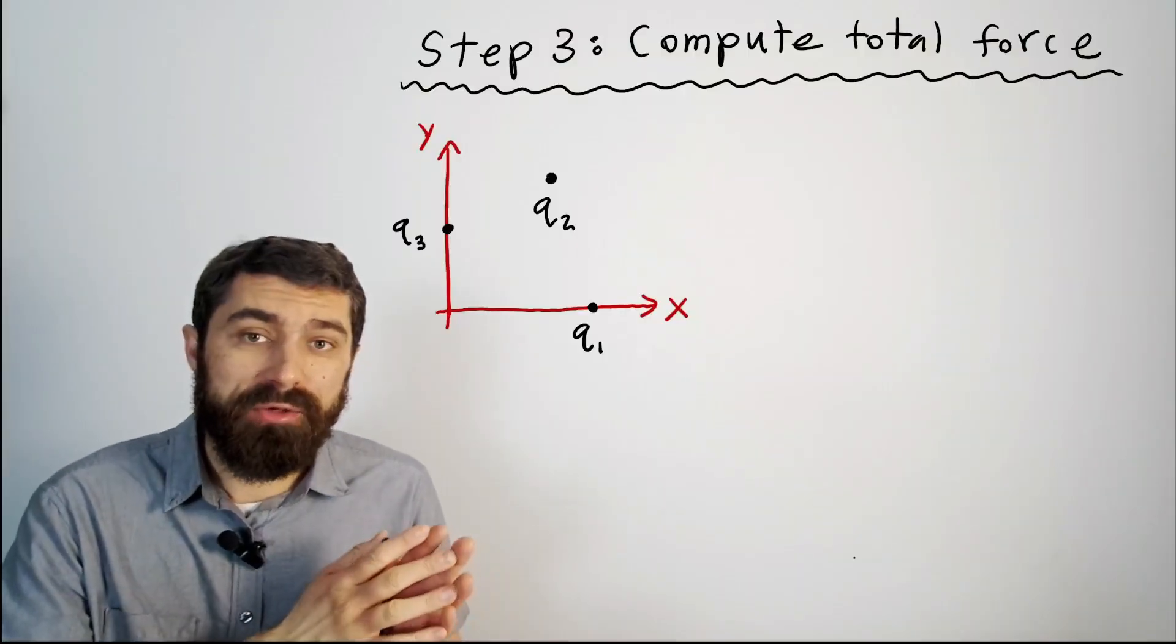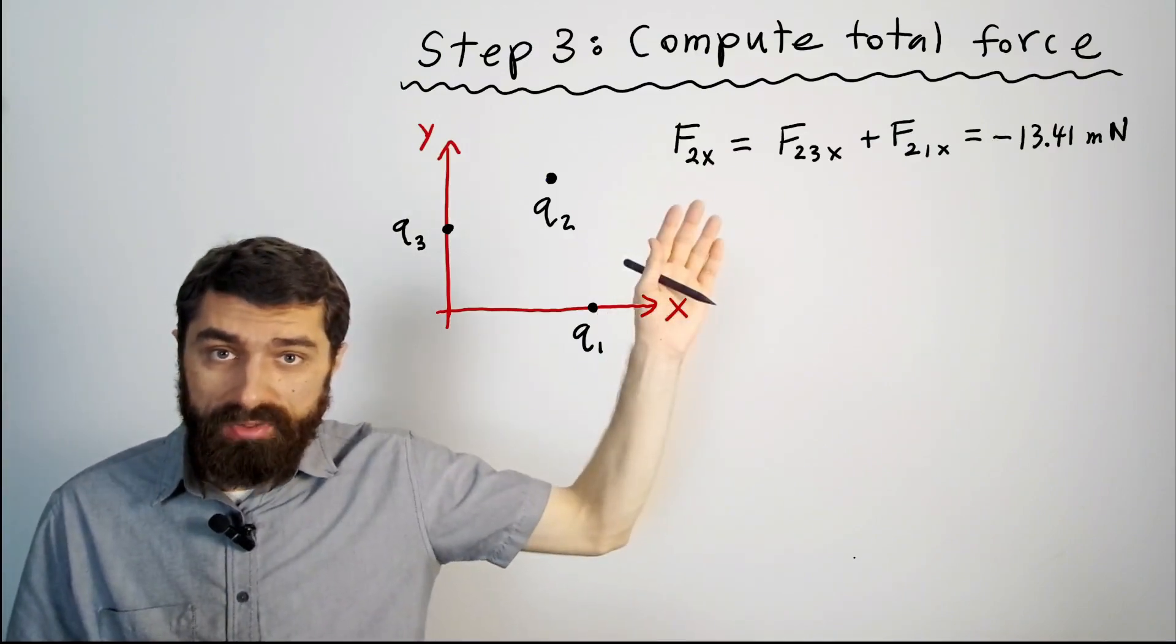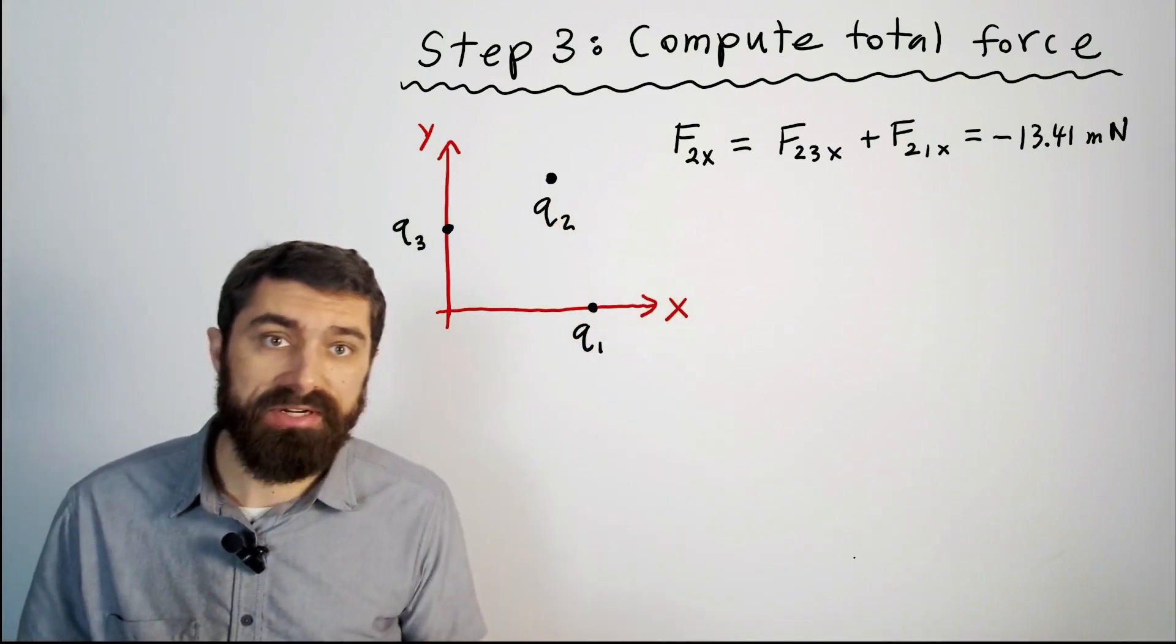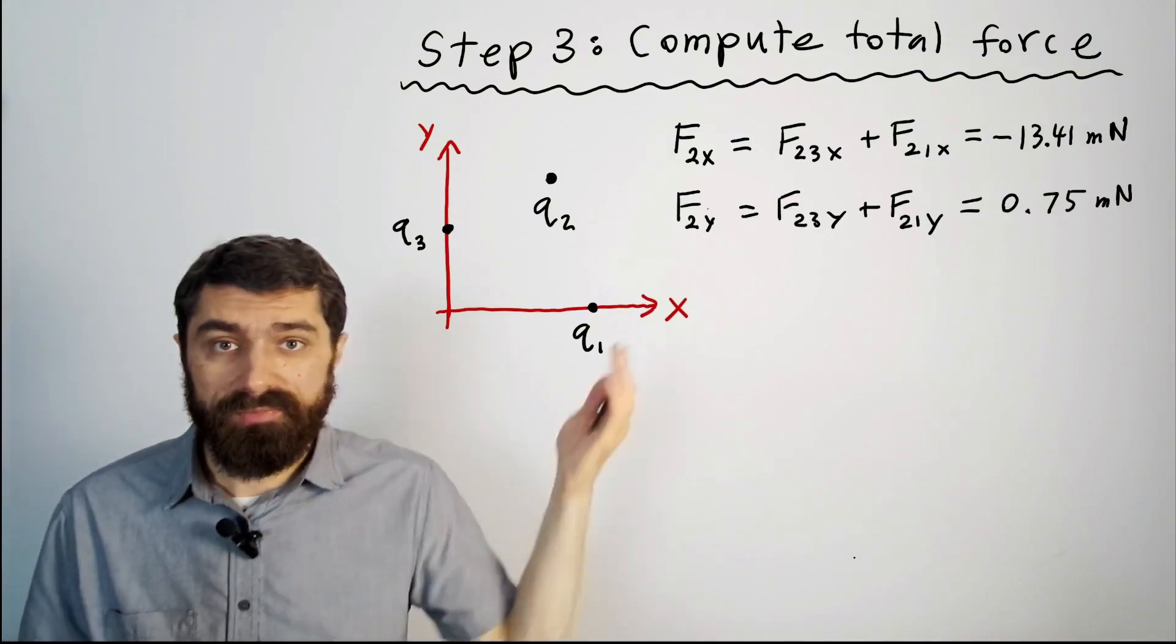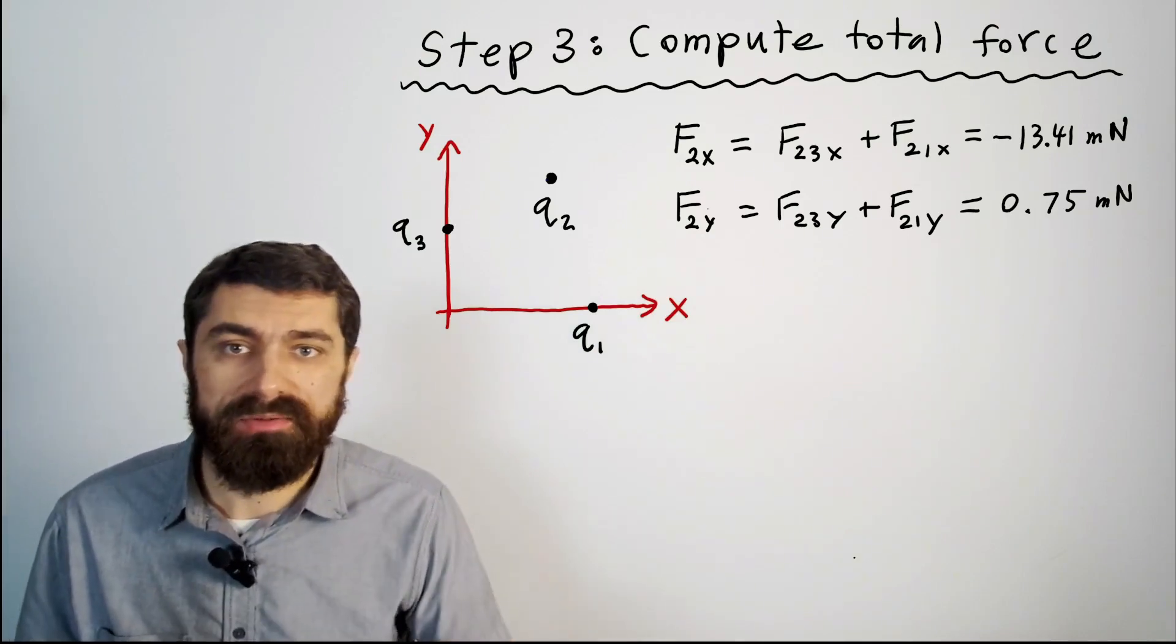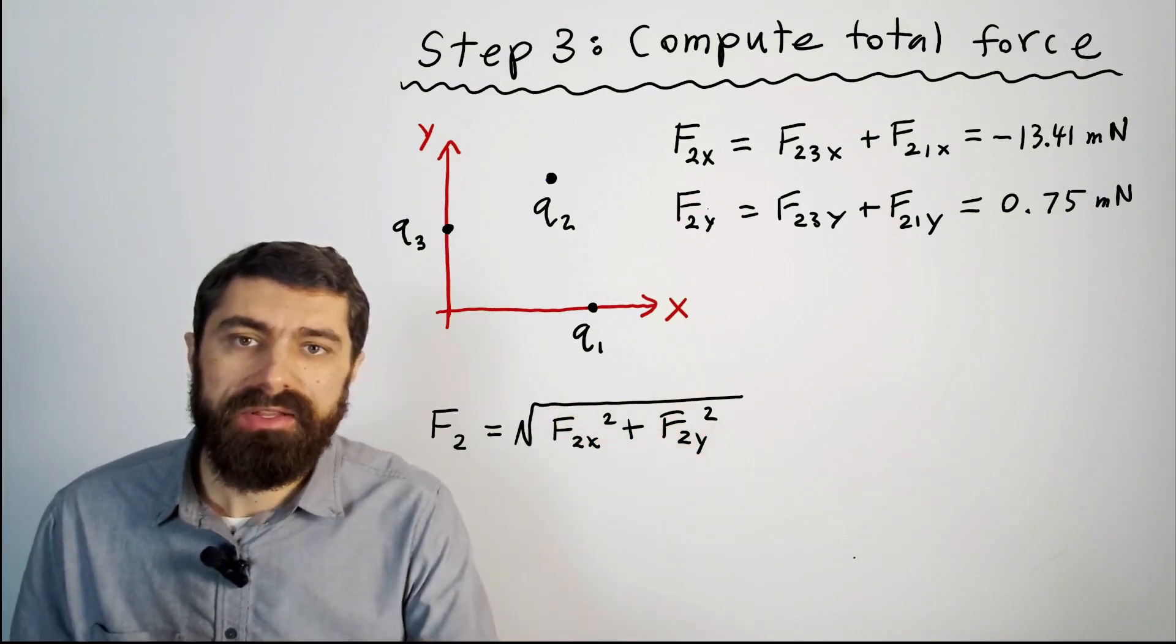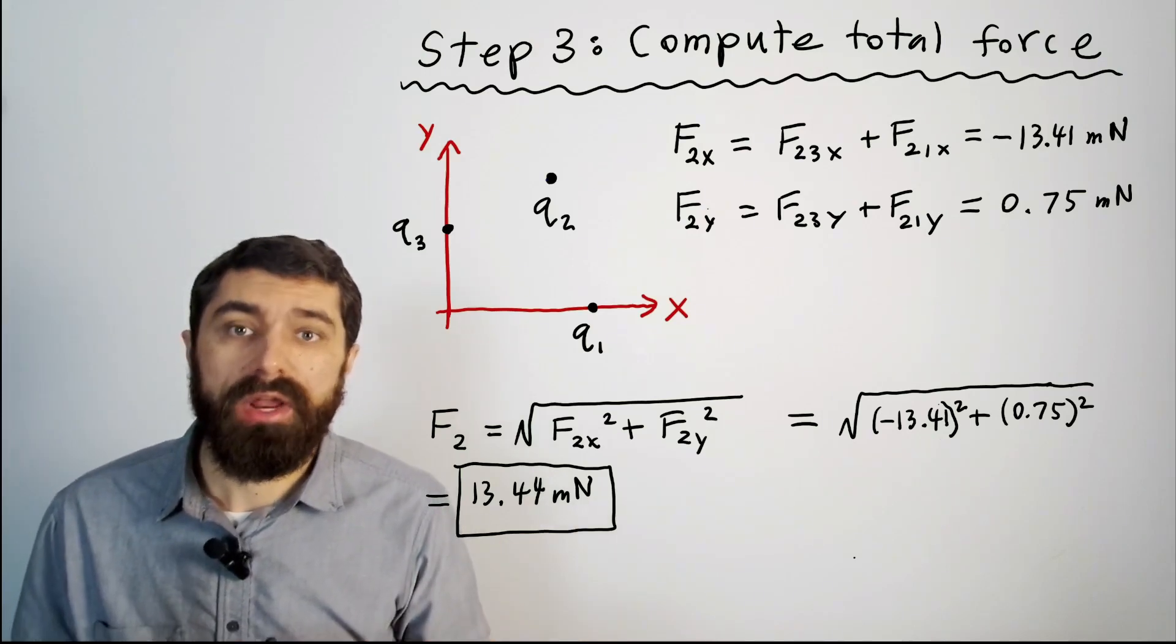Okay so then computing the total force is relatively straightforward. Basically if you want to find the x component of the total force on charge q2 you just add the x components due to the individual charges and I calculated minus 13.41 millinewtons. And you can do the same thing for f2y you add the individual components just plug and chug from the numbers on the previous slide. Then if you want to find the total magnitude of the force you just take the square root of the sum of the squares plug and chug and I get 13.44 millinewtons.